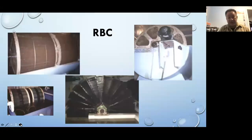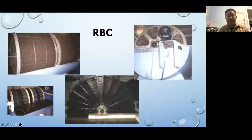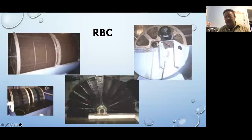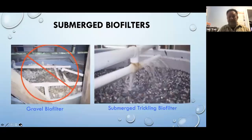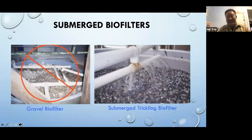Rotating biological contactors (RBCs) can get very heavy — I've seen a three-inch steel shaft bent from the weight after long-term bacterial population. Some floating RBC designs use air rotation, but over time bacteria can populate unevenly, making them lopsided and reducing rotation. RBCs are harder to clean, weight becomes an issue, and water distribution through them is a challenge.